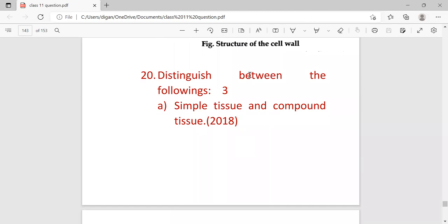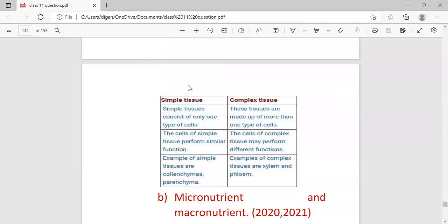Plant cell walls are made up of cellulose. In bacterial cells, cell walls are composed of sugar and amino acid polymer called peptidoglycan. The main component of fungal cell walls is chitin, glucans, and proteins. This is the structure of a cell wall. Next, distinguish between the following: First is simple tissue and complex tissue. Simple tissue consists of only one type of cell. Complex tissues are made up of more than one type of cell. Examples of simple tissue are collenchyma and parenchyma, whereas examples of complex tissue are xylem and phloem.